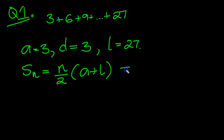So the number of terms, which we don't know yet, over 2. a is 3, plus 27 is the last term.